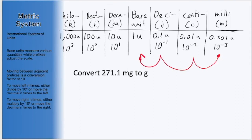and to do that we will move one, two, three spaces to the left. Moving three spaces to the left on our table means we can take the decimal and move three spaces to the left as well. Moving our decimal here ends up giving us 0.2711, and we are now in grams.